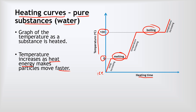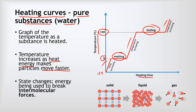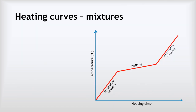Normally whilst heating, the heat energy is used to make the particles move faster — that's what's happening in the sloping sections of the graph. However, when we get to the state changes at 0°C and 100°C, energy is instead being used to break the intermolecular forces, shown in blue on these diagrams. That's why the graph flattens out during state changes.